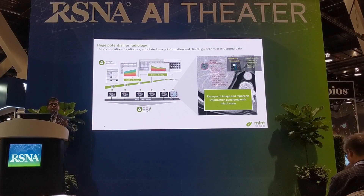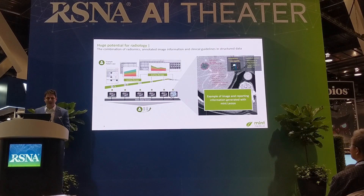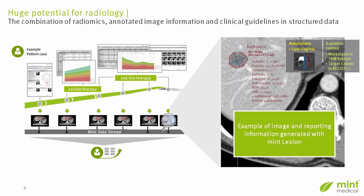Mint Lesion allows you to generate structured data in one workflow and empowers you to be future-proof. Looking at two use cases together — colorectal staging and RECIST 1.1 — we can consider these within one course of disease for one patient: a starting point with colorectal staging, then first-line therapy, and if unsuccessful, a second-line therapy. For each time point of assessment, Mint offers template-based support, guiding you through and generating a report, while also combining all this information into a data stream of the patient's complete oncological history.